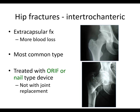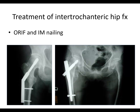Intertrochanteric fractures are extracapsular fractures with more blood loss; they are the more common type. They're treated with ORIF or nail-type devices, not with joint replacement. Intertrochanteric fractures occur in this region — here's a great example where you can see the lesser trochanter is off and the fracture is up here. This is not a femoral neck fracture, which occurs higher up; this occurs extracapsularly down here. It's treated with ORIF or a nail. Here's a two-part fracture treated with a sliding hip screw device, and here's a four-part fracture with greater and lesser trochanter involvement fixed with a nail.